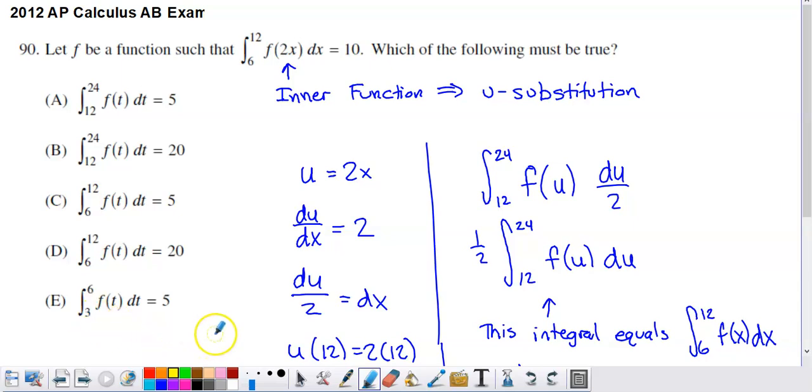That can maybe clue you in on how you're supposed to pursue this. One tempting thing to do is to say, if the integral of f of 2x is equal to 10, then I'm just going to double that result and choose option D. And I'm guessing that was probably the most frequently chosen option for this problem. It's not the correct option. Here's why.